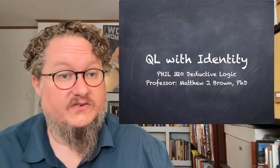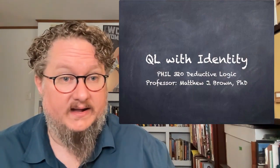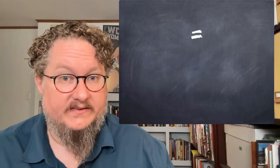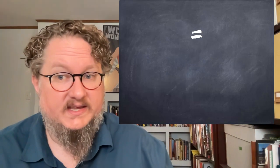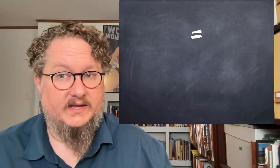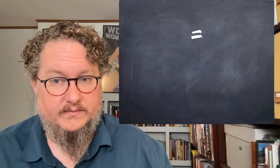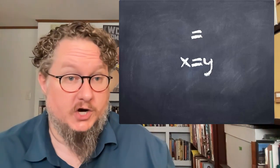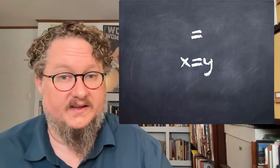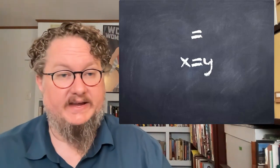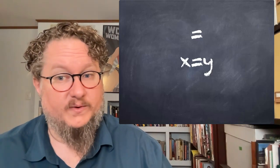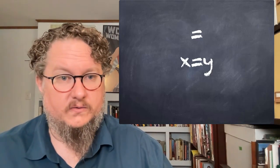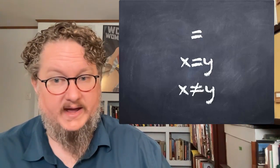This is an extension to our language QL, adding an additional logical symbol: the identity symbol, which we'll use the equal sign to represent. The equal sign means that X is identical to Y. It applies to terms — variables or constants. It is a two-place predicate, but a special one with a special logical meaning.